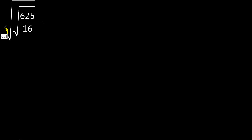Here there is no number, therefore it is 2. Here is 2, therefore multiply by 2. Multiply by 2 is 4.